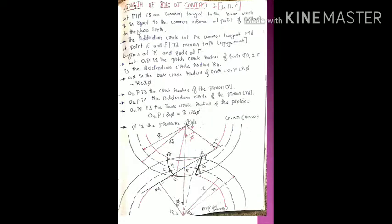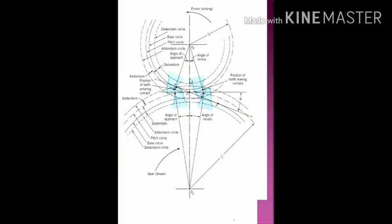So we are going to discuss what the length of that path of contact will be. For this, they consider these two figures. This is a line diagram indicating when two gears are meshed like this.